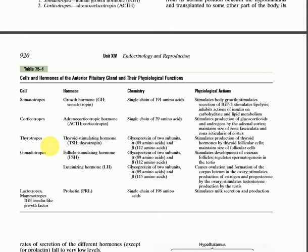The next cells are the thyrotrophs. Thyrotrophs release thyroid stimulating hormone, TSH. It is a glycoprotein — a mixture of carbohydrate and protein. It has two subunits, alpha and beta. The alpha subunit contains 89 amino acids and the beta subunit contains 112 amino acids. It stimulates the production of thyroid hormone by thyroid follicular cells, maintains the size of the follicular cells, stimulates the development of ovarian follicles, and regulates spermatogenesis in the testes.